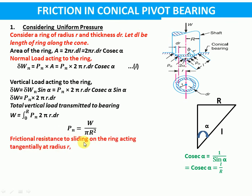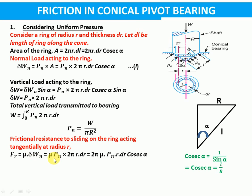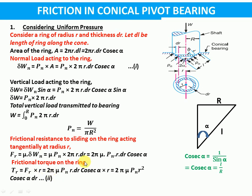Now, frictional resistance to sliding on the ring, acting tangentially at radius r, will be: frictional resistance equals normal load times mu, that is coefficient of friction. So along this elementary ring, fr will be mu times dWn, that is mu times pn times 2πr·dr·cosecant alpha. Frictional torque will be frictional resistance times r, so it will be 2π·mu·pn·r·dr·cosecant alpha times r, which becomes 2π·mu·pn·r²·cosecant alpha·dr.